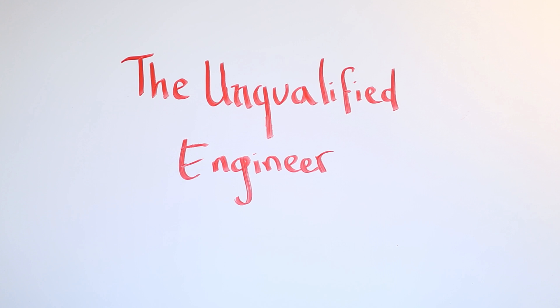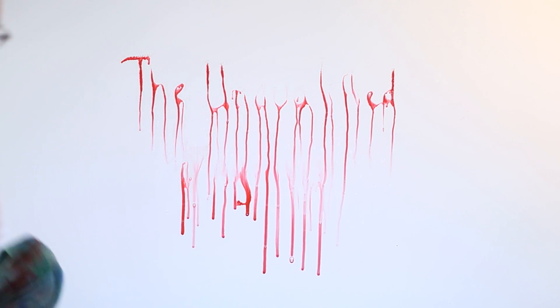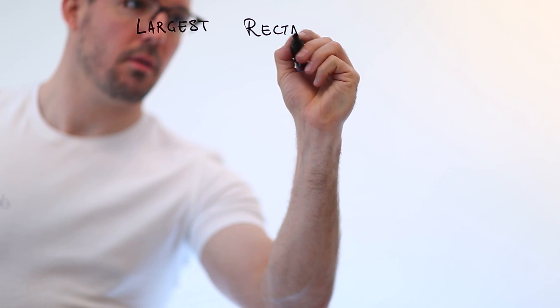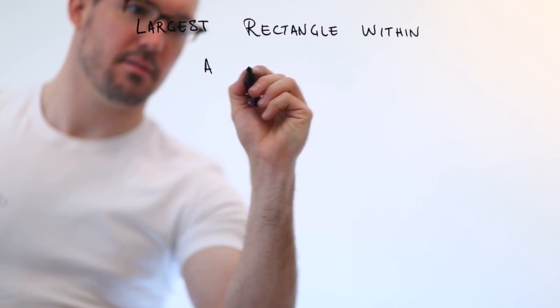Got some new markers for my glass — very nice. Best part is when you spray them it looks like blood. For this episode we're going to be exploring an oldie but a goodie: the largest rectangle within a histogram problem.